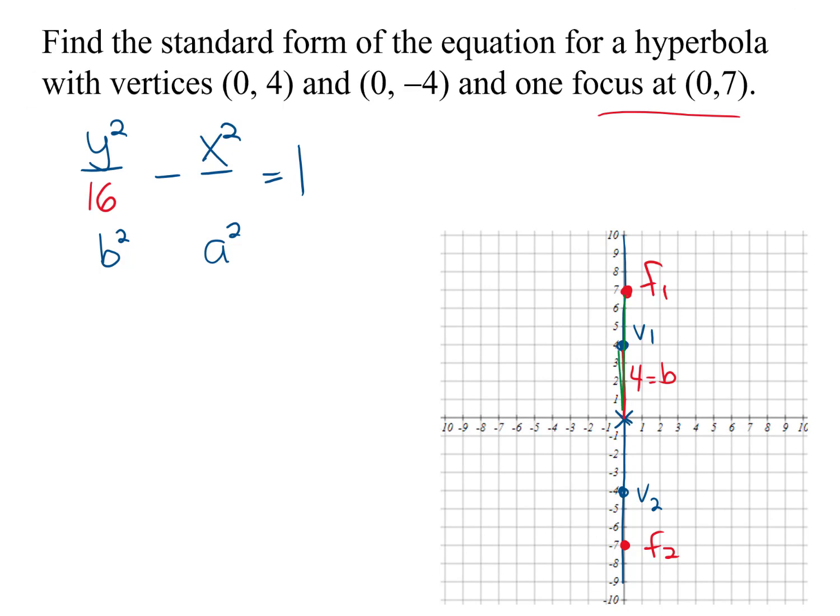So c must be 7 because from the center that focus is 7 away. My connection, c-squared equals a-squared plus b-squared.